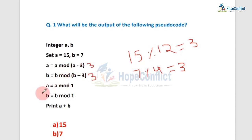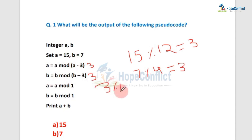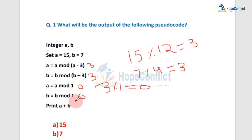Now they are saying a equals a mod b. Value of a is now 3 (not 15) and value of b is 3, so a equals 3 mod 3. If we divide 3 by 3, the remainder is 0, so value of a equals 0. Similarly value of b also becomes 0. We have to print a plus b, which is 0 plus 0 equals 0. So the answer is option C.